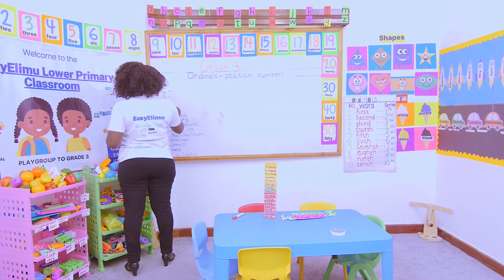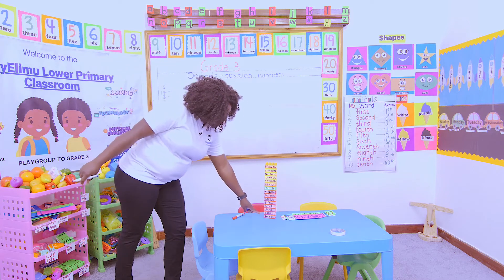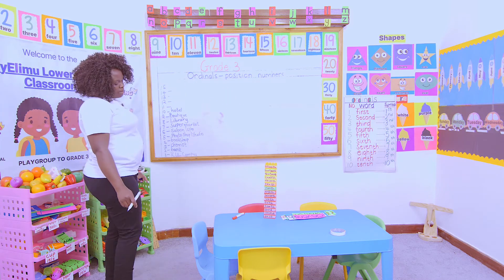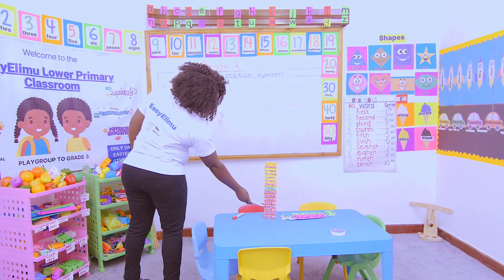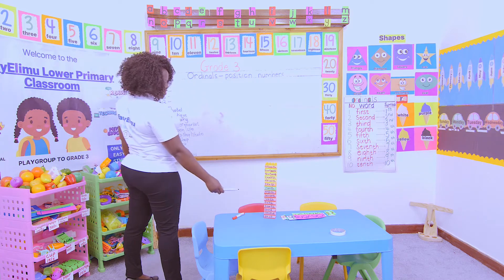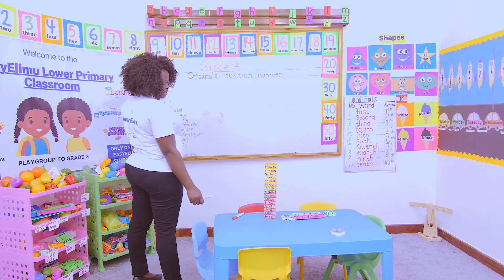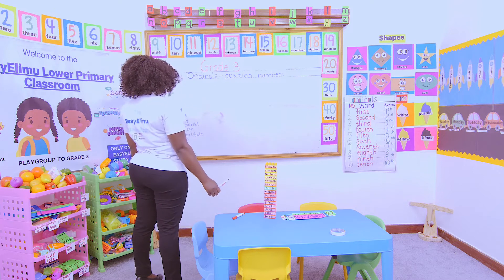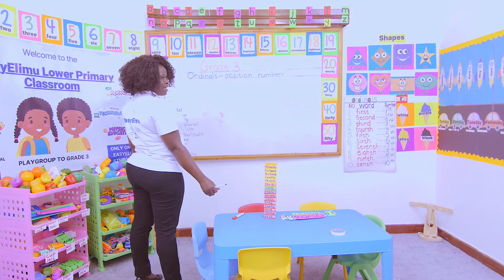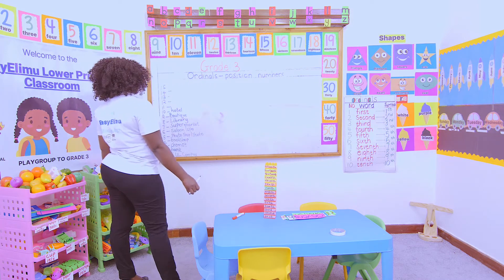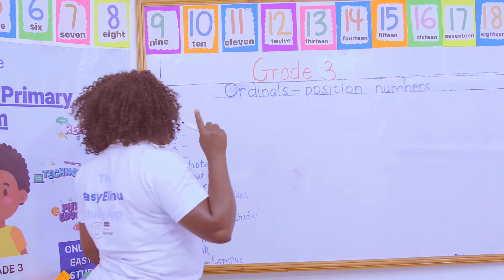A boutique is where you buy necklaces, chains, clothes — all dressing things are found in a boutique, and that was on the ninth floor. On the tenth floor we had a hotel. So to recap: first floor — KU campus, second floor — bank, third floor — chemist, fourth floor — bookshop, fifth floor — photoshop, sixth floor — salon, seventh floor — supermarket, eighth floor — library, ninth floor — boutique, tenth floor — hotel.